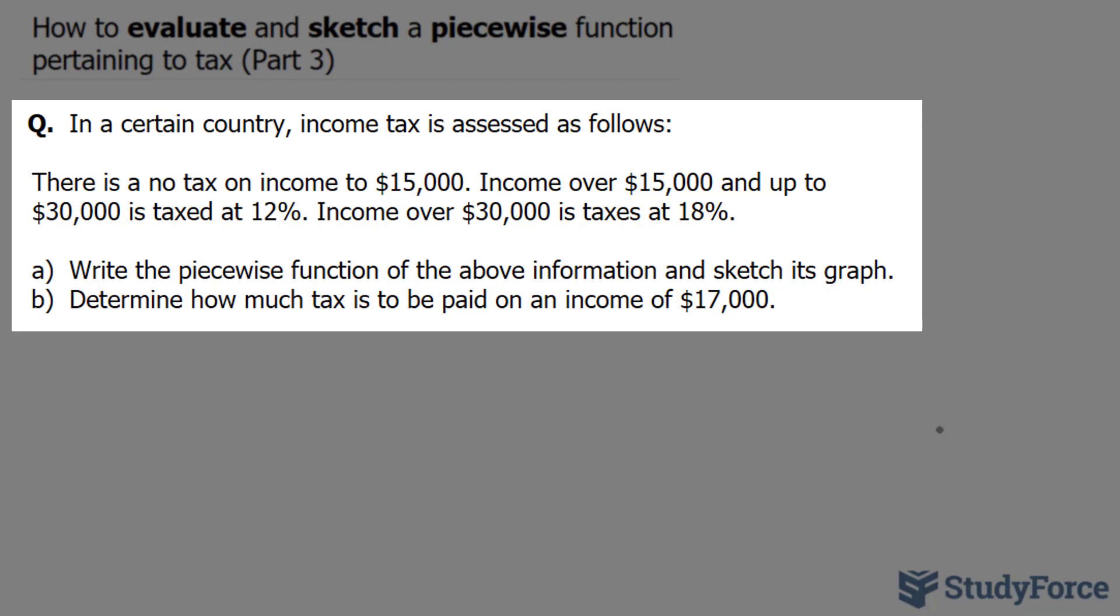We have to: a, write a piecewise function of the above information and sketch its graph, and b, determine how much tax is to be paid on an income of $17,000.